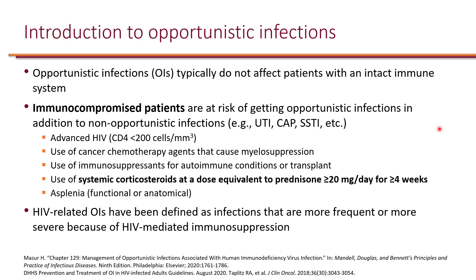Immunocompromised patients not only can they get opportunistic infections, but they can also have non-opportunistic infections like other people — infections like UTIs, community-acquired pneumonia, skin and soft tissue infections, etc.